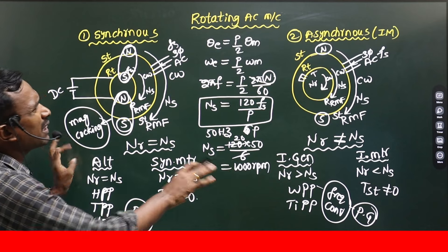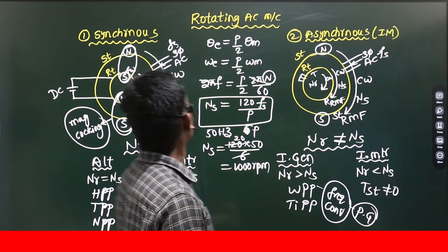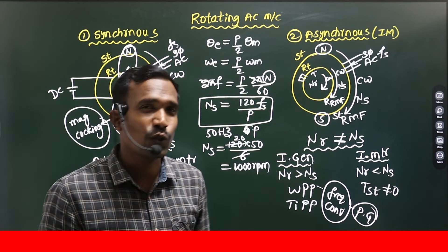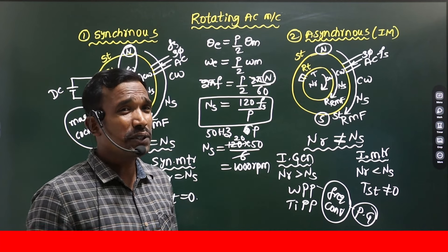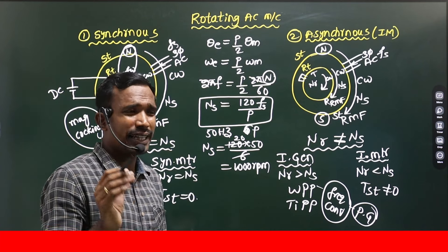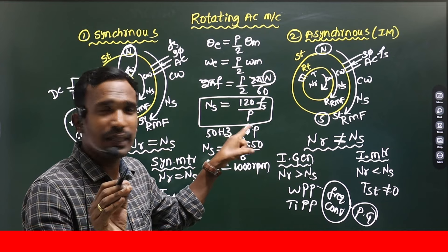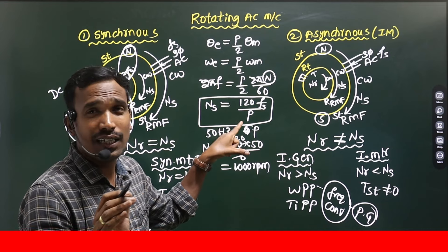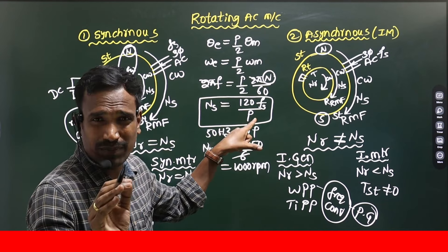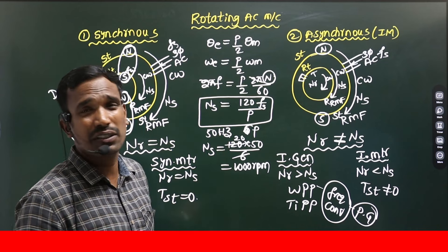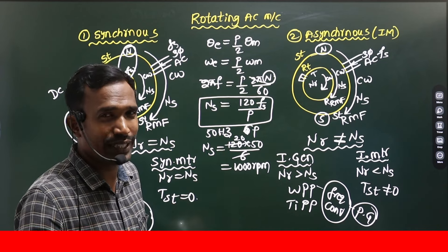These are the basic differences between Synchronous and Asynchronous machines. Remember the formula Ns = 120F/P — a few exam questions will be asked on this formula. Let's see how they will ask questions on this formula in the next video. Thank you.